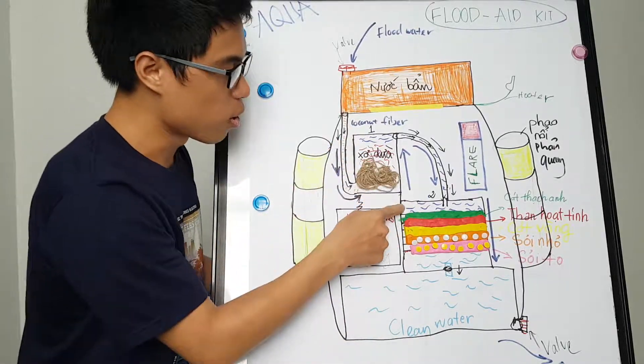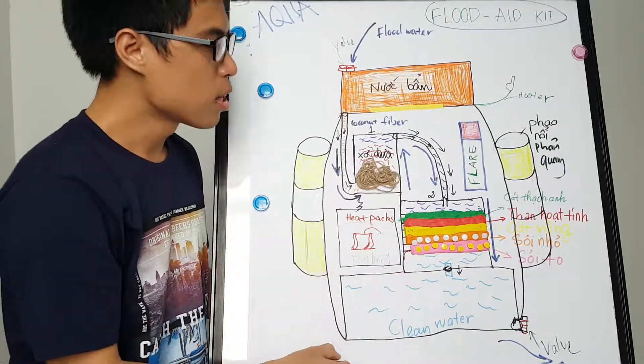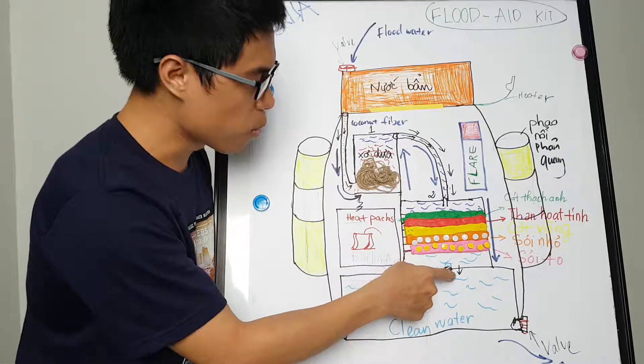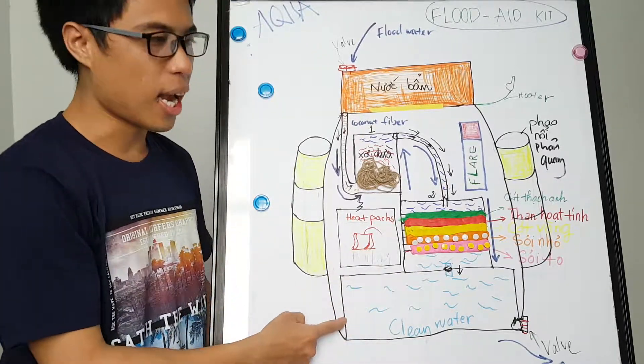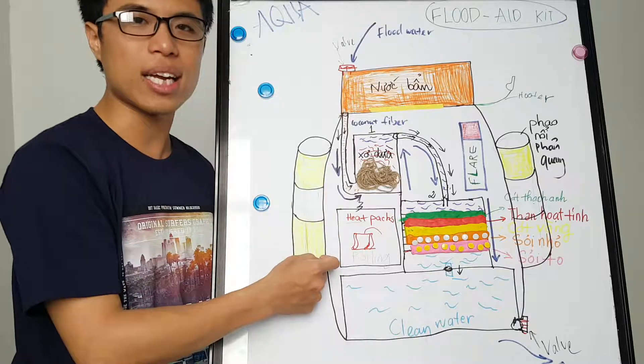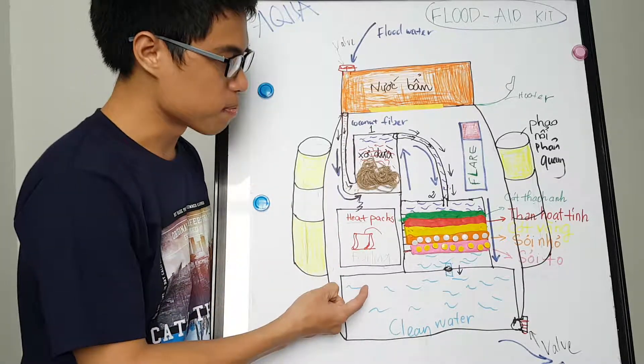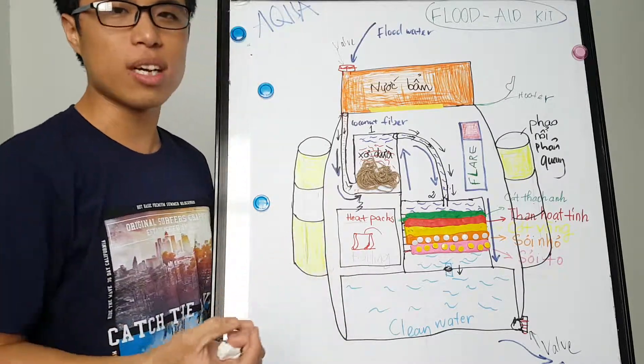After that, the water will flow to the next block called the 5-floor filtering. After this, it will flow to a small container here and we will use this water to boil by a heat pack. This can be self-boiling and after that, we also have the clean water.